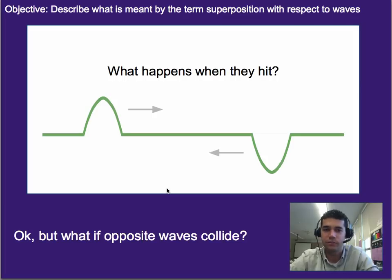Alright, so next question. What happens if you have waves that are the opposite? So we've got one wave that's up and one that's down, or wave pulse I should say. What do you think happens? Pause the video, take a moment, think about it.